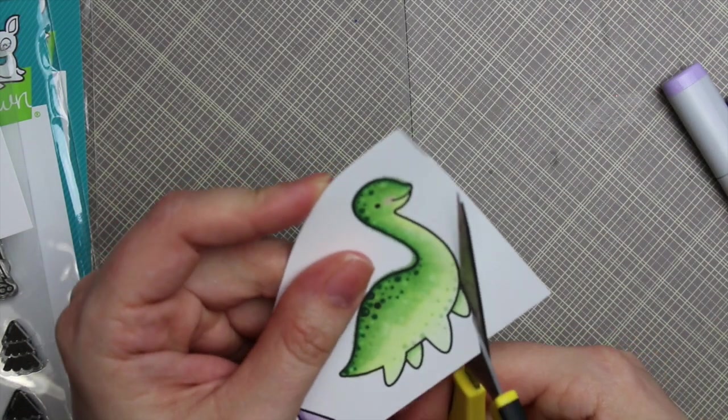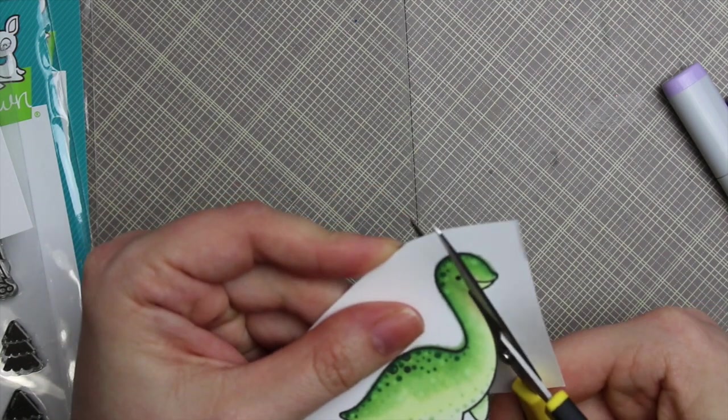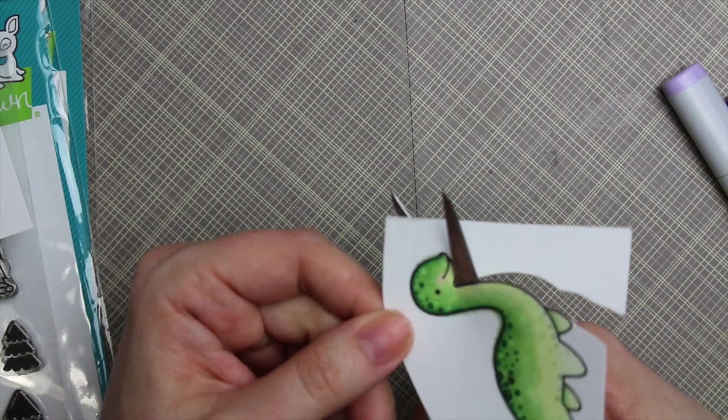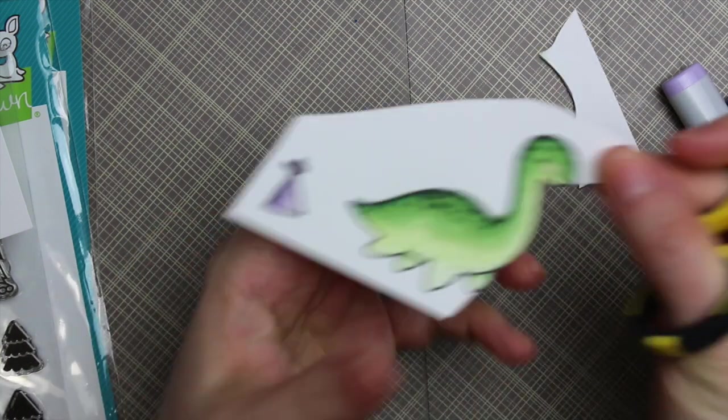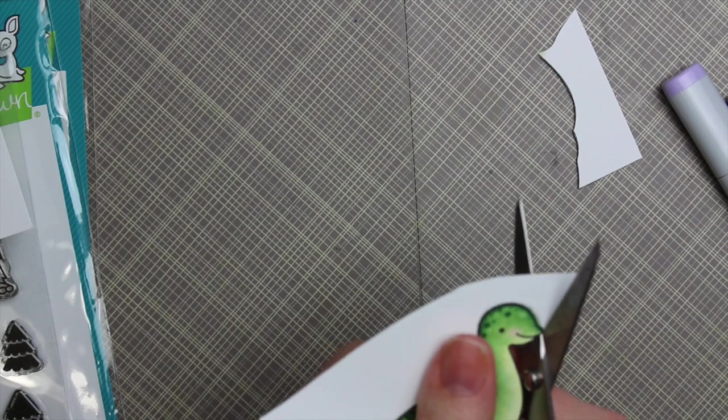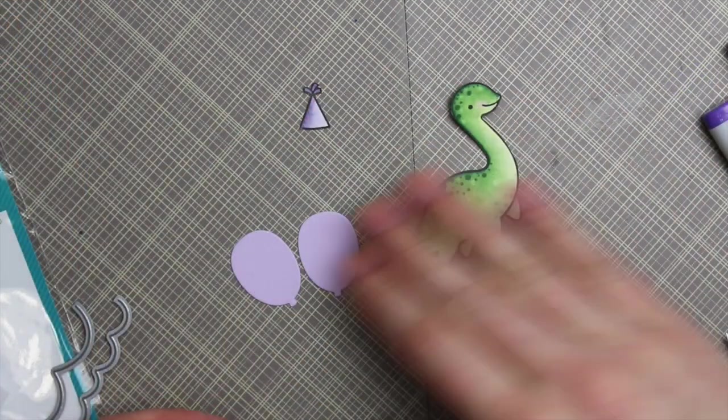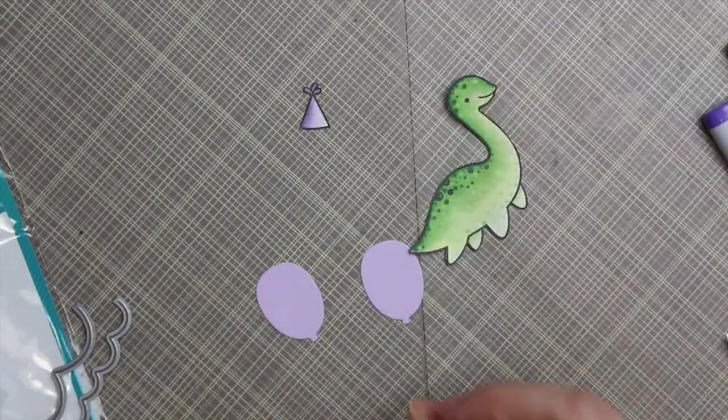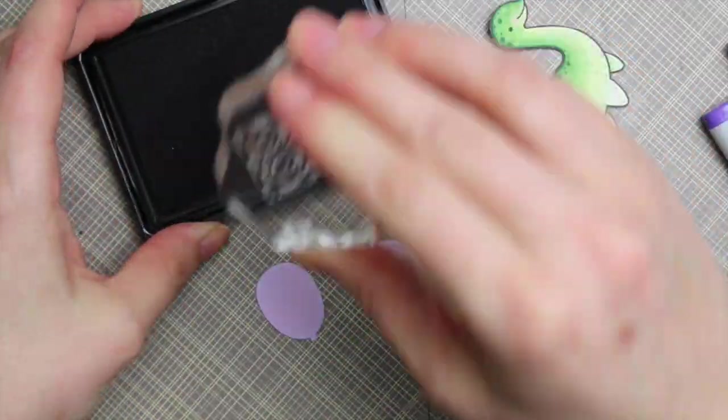And then I fussy cut the image and totally forgot until the card was like adhered. I didn't go around the edges with a black marker. Usually I use my Memento Tuxedo black marker to go around fussy cut images. It just removes any little white areas if you don't cut out perfectly, but I forgot completely. So whatever. I did a pretty good job cutting this out though. So I didn't, you know, obviously didn't worry about it too much.